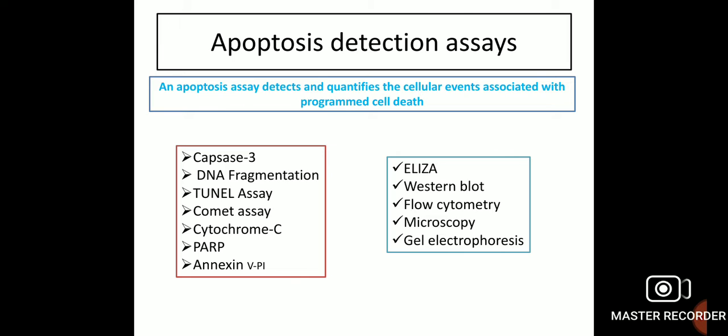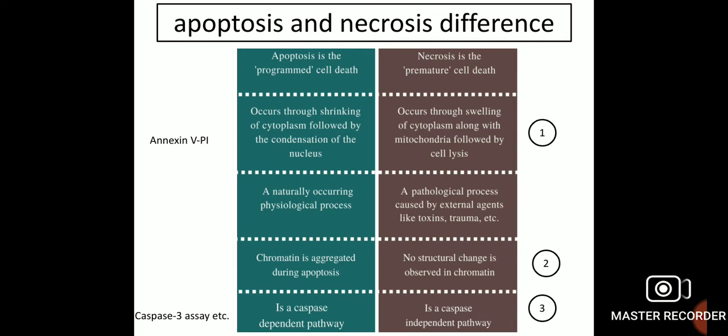These assays can be performed using various techniques such as ELISA, western blot, flow cytometry, microscopy, and gel electrophoresis. Before explaining how each method works, we will look at the differences between apoptosis and necrosis — particularly how to determine whether a cell is necrotic or apoptotic.